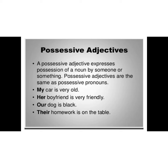Let us understand possessive adjectives. A possessive adjective shows belongingness — it expresses possession of a noun by someone or something. For example: My car is very old. Here, the word my is indicating possession of the noun, so it is a possessive adjective. Next sentence: Her boyfriend is very friendly. Here, the word her is a possessive adjective.